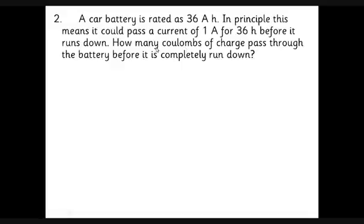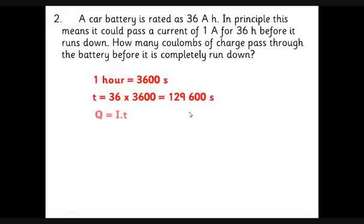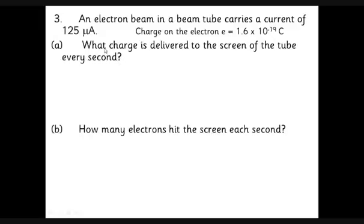Two conversions to do here: one hour is 3600 seconds, and we've got 36 hours, so 36 hours is 129,600 seconds. Q = I×t. The I bit was simple because it's one amp for 36 hours, so 1 × 129,600. This battery can give the energy to 129,600 coulombs of charge. If it does that quicker, you'll get more current for less time, but you'll always get that amount of charge flowing through the battery before it runs out of energy.